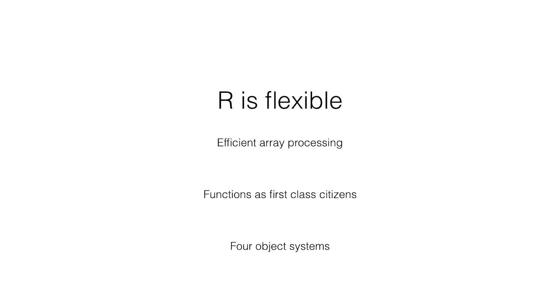An overview of R and its current community development. R started in 1993 as an open source implementation of S, the statistical software programming language developed by Bell Labs. R is really flexible — a good and bad thing. It has efficient array processing: if you pass a function that takes an integer and returns a double, you can pass a matrix of integers and get a correct matrix of doubles back without extra work. It has functions as first-class citizens and four object systems.